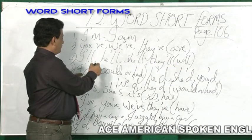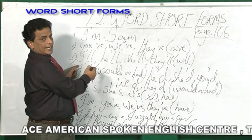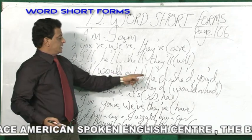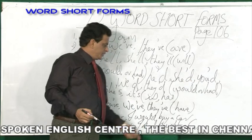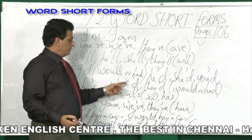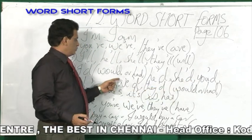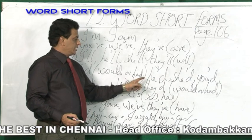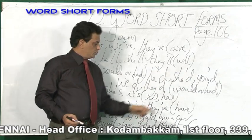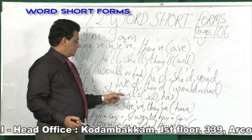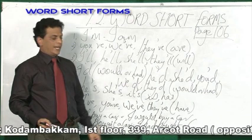And here, I apostrophe D — it can be I would or I had. He'd, she'd, you'd, we'd, they'd — it can be would or had. He would or he had, she would or she had, you would or you had, we would or we had, they would or they had.